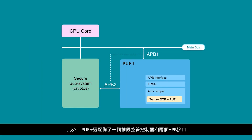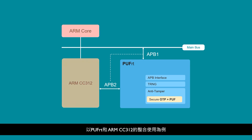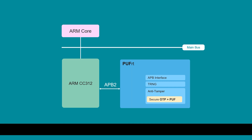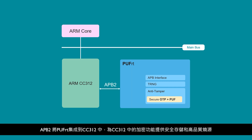PUF RT is also equipped with a controller of permission control and two APB interfaces. APB1 connects PUF RT to the main bus and enables OTP testing with JTAG, which would be disabled after testing so the secure boundary remains intact. APB2 fully integrates PUF RT into CC312 to provide secure storage and entropy source for the crypto functions in CC312.